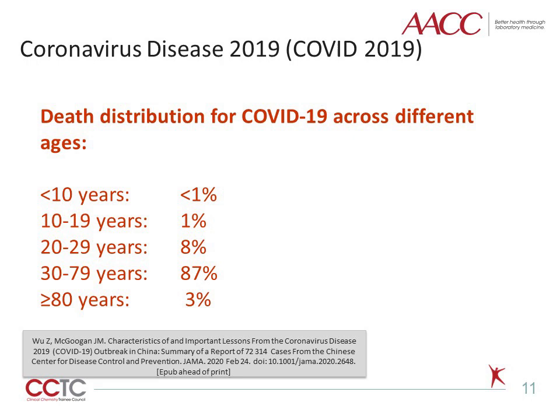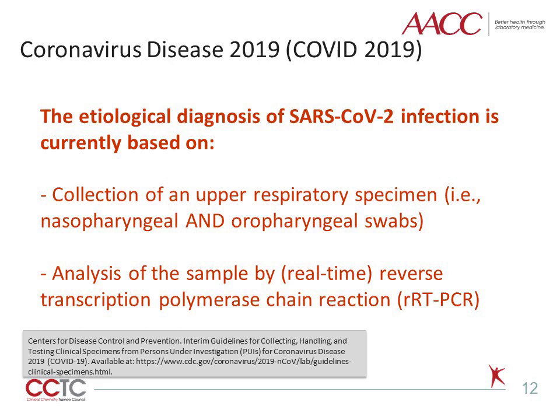Regarding the distribution of deaths across different ages, it is highest between 30 and 79 years, followed by the age range of 20 to 29 years. Data gathered so far attest that COVID-19 may only produce a mild disease in children, reflected by the low mortality rate. However, the presence of mild or absent symptoms would make children important reservoirs and carriers of the virus.